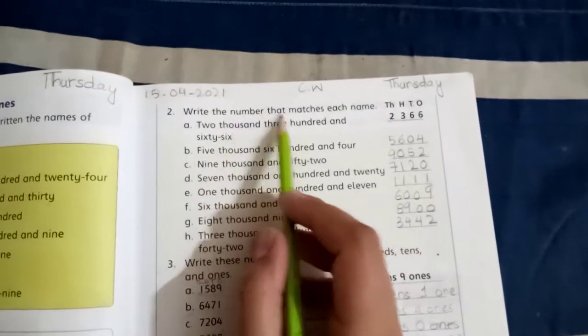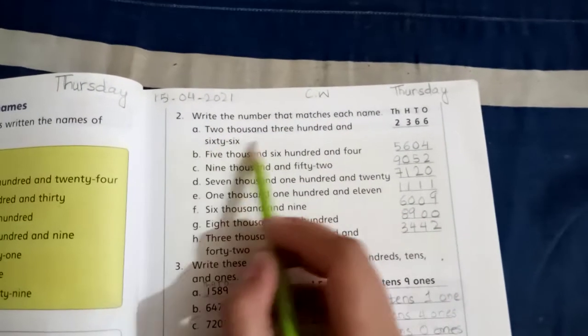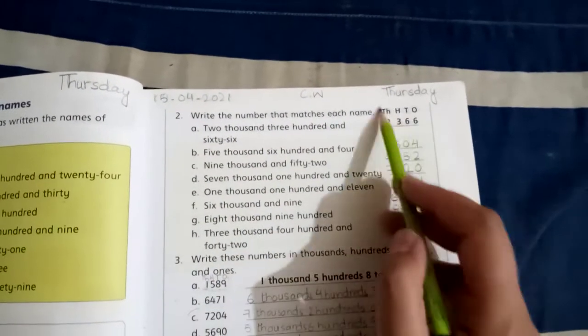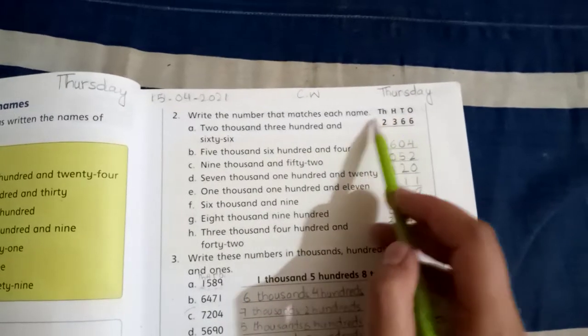Here, write the numbers that match each name. Now, we have to convert the words to numbers. We have ones, tens, hundreds, thousands.